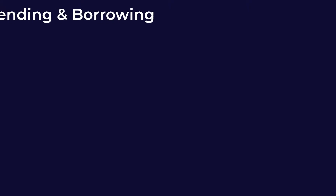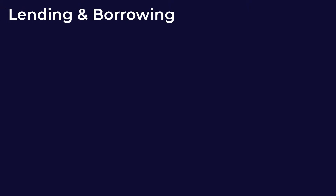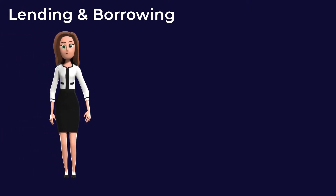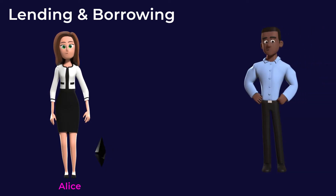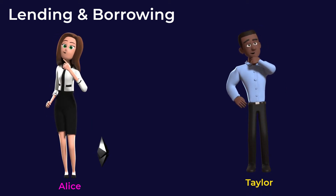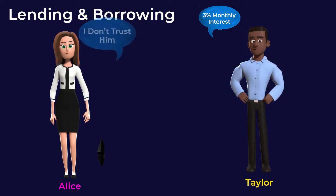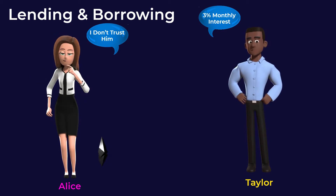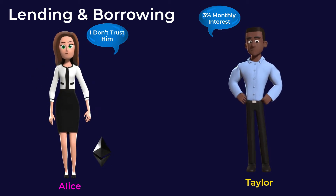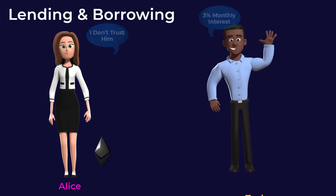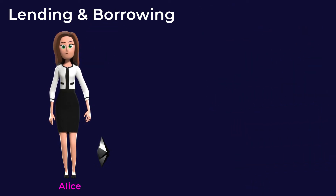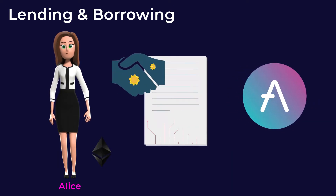Another use of smart contracts is in the lending and borrowing space. For example, Alice wants to earn interest on her $4,000 worth of Ethereum. She meets Taylor, who wants to borrow her money and will pay her 3% interest monthly. But Alice doesn't know Taylor that much, so she doesn't trust him. Instead, Alice can use a dApp like Aave, where she deposits her money in a smart contract for lending, and she will start earning interest right away.